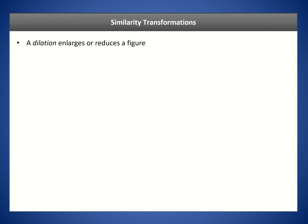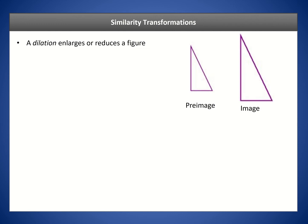In the last lesson we discussed dilations. A dilation enlarges or reduces the size of a figure. The angles stay preserved in both the pre-image and the image, but the size changes and therefore the side lengths are not preserved. For example, this pre-image got dilated and enlarged to the image on the right, but the angles are preserved.